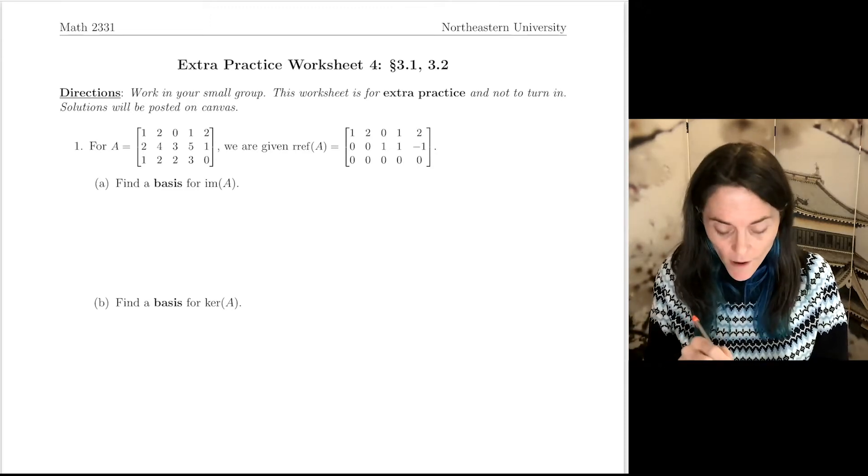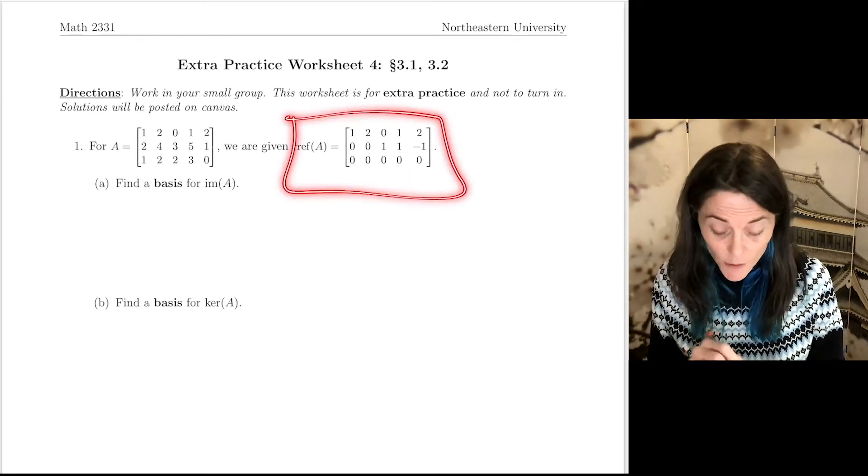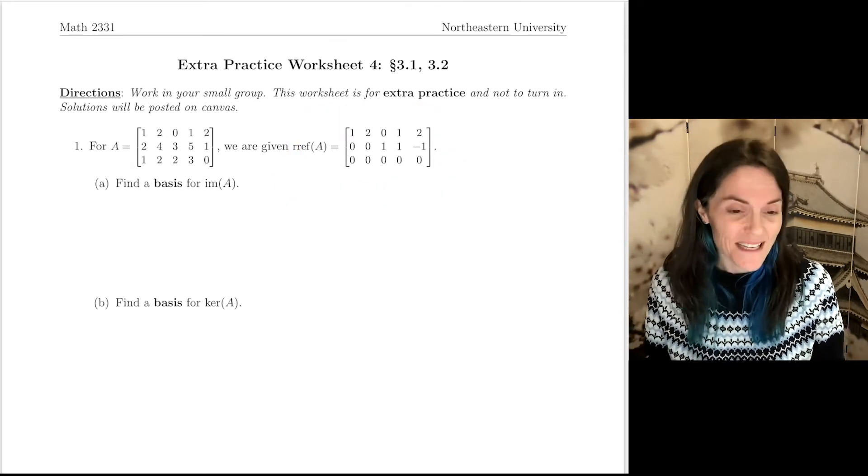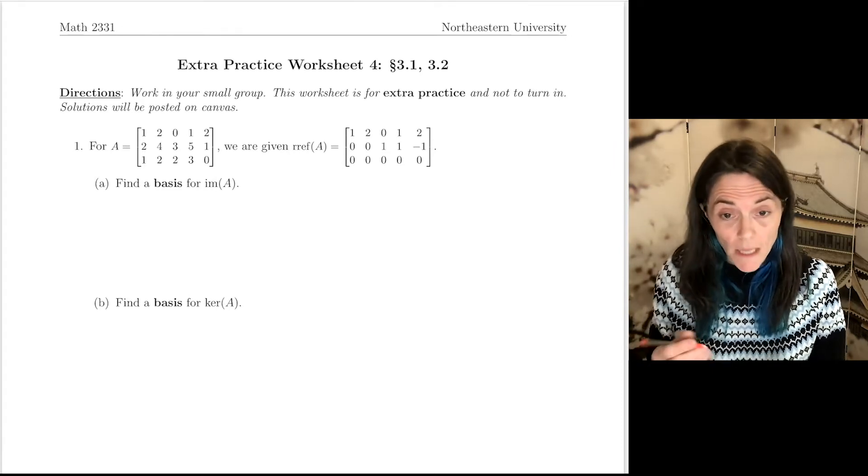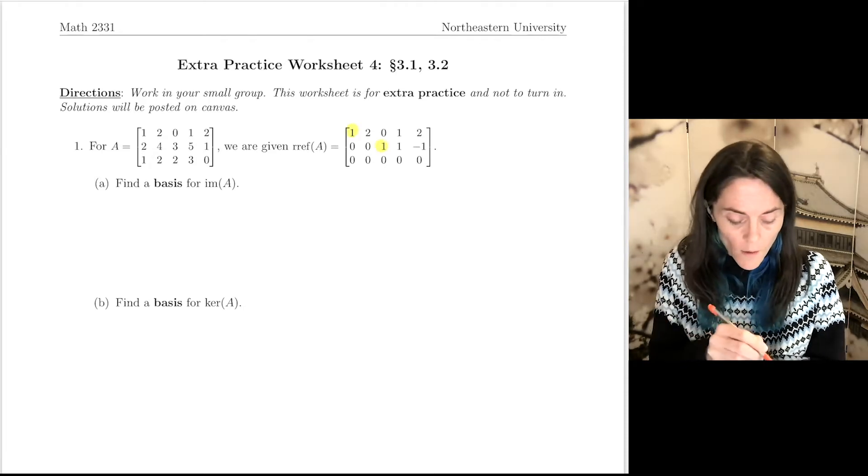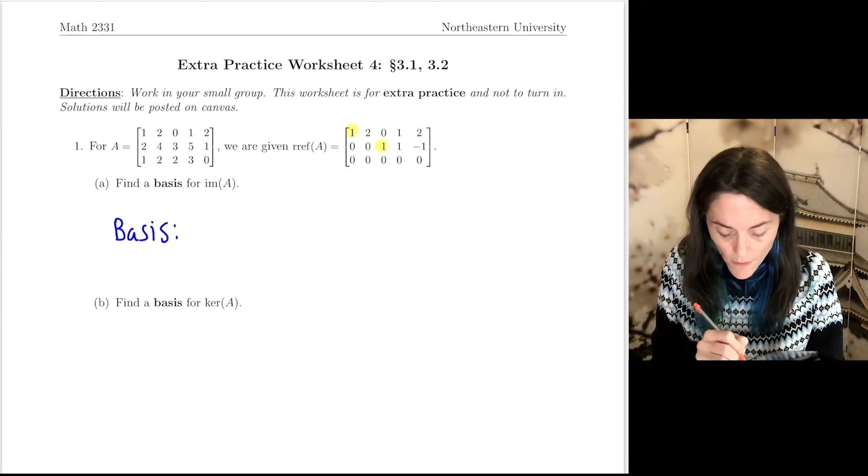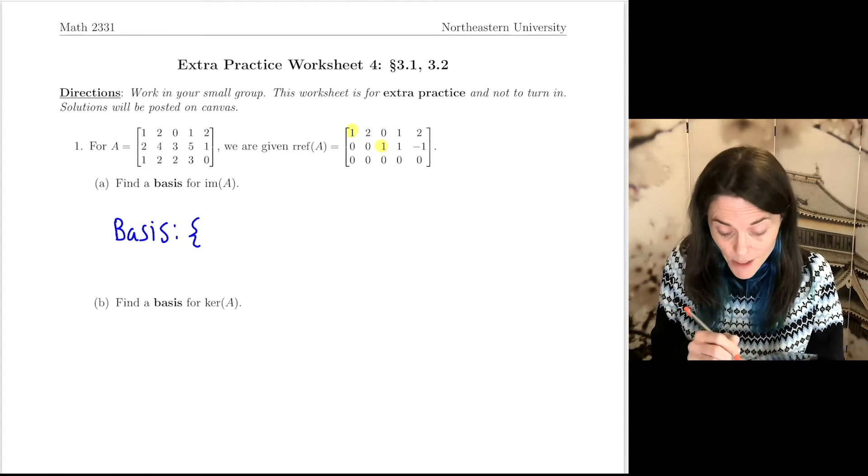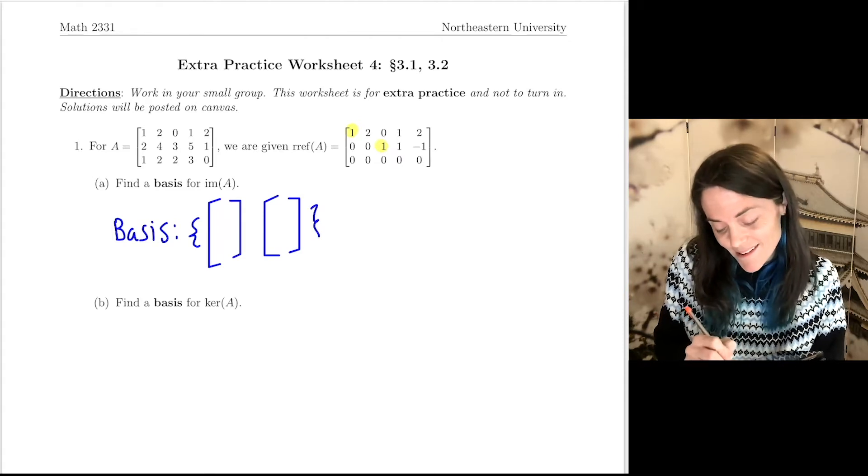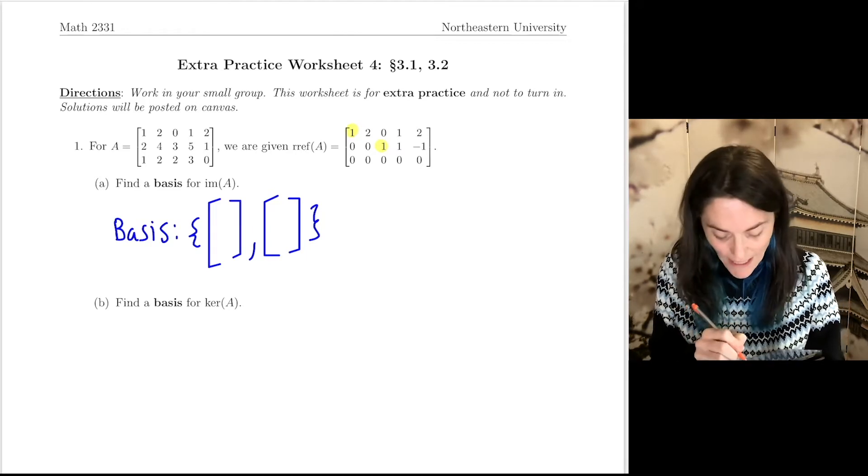We are given a matrix A and its reduced row echelon form, so we don't need to justify that or do any row operations. We want to find a basis for the image of A and a basis for the kernel of A. If I look at this, you see leading one, leading one. We can just write down immediately a basis for the image of A. We use the columns from matrix A that correspond to the locations where you have leading ones in the reduced row echelon form, and so this would be columns 1 and 3 from matrix A.